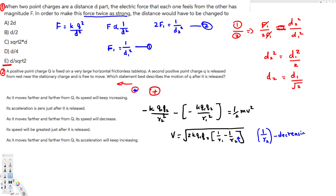As r2 gets bigger in the denominator, 1/r2 becomes smaller. Since we are subtracting a smaller number, the overall value inside the square root gets bigger, so velocity increases as the distance increases. The relationship is: as r2 increases, velocity increases.